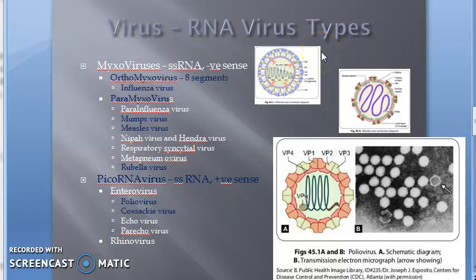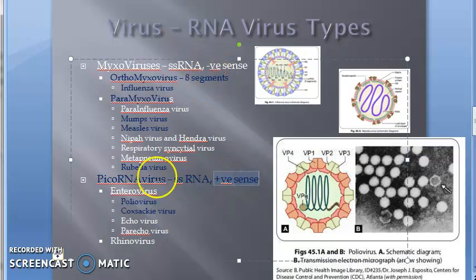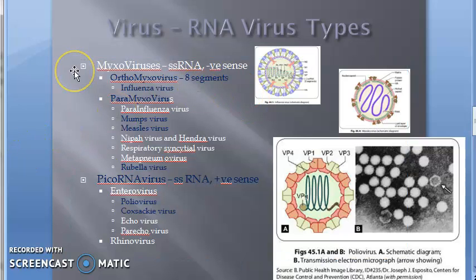Mixoviruses are single-stranded RNA. Whenever it's RNA and I don't mention otherwise, it is single-stranded only. Double-stranded RNA is found only in rotavirus, which is a reovirus. Everything else is single-stranded RNA, sometimes negative sense, sometimes positive sense — but that information you don't need to worry about.